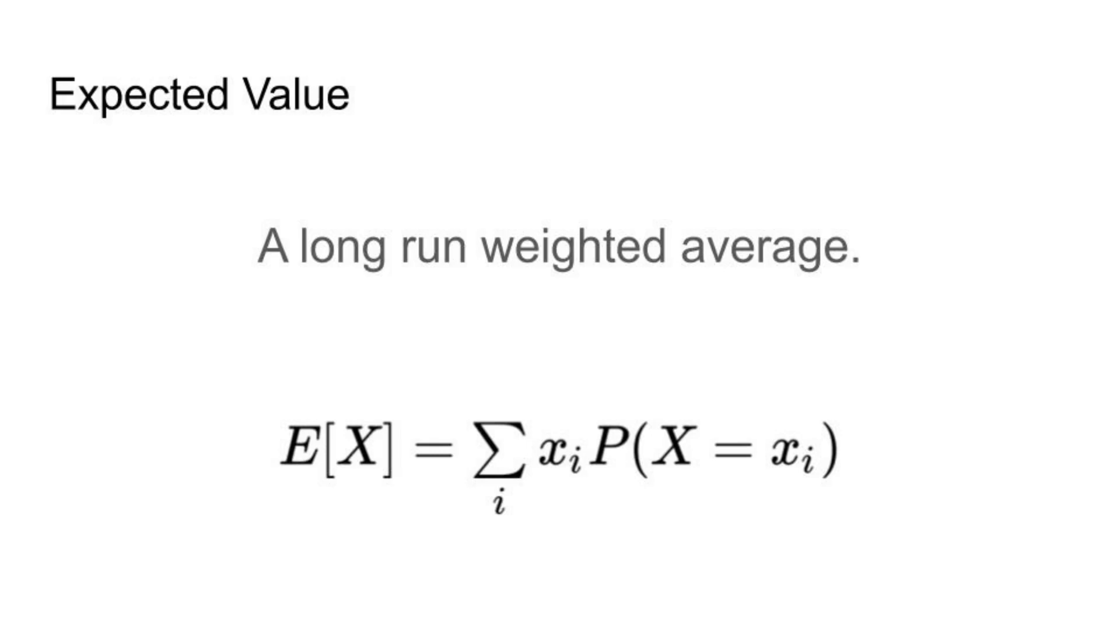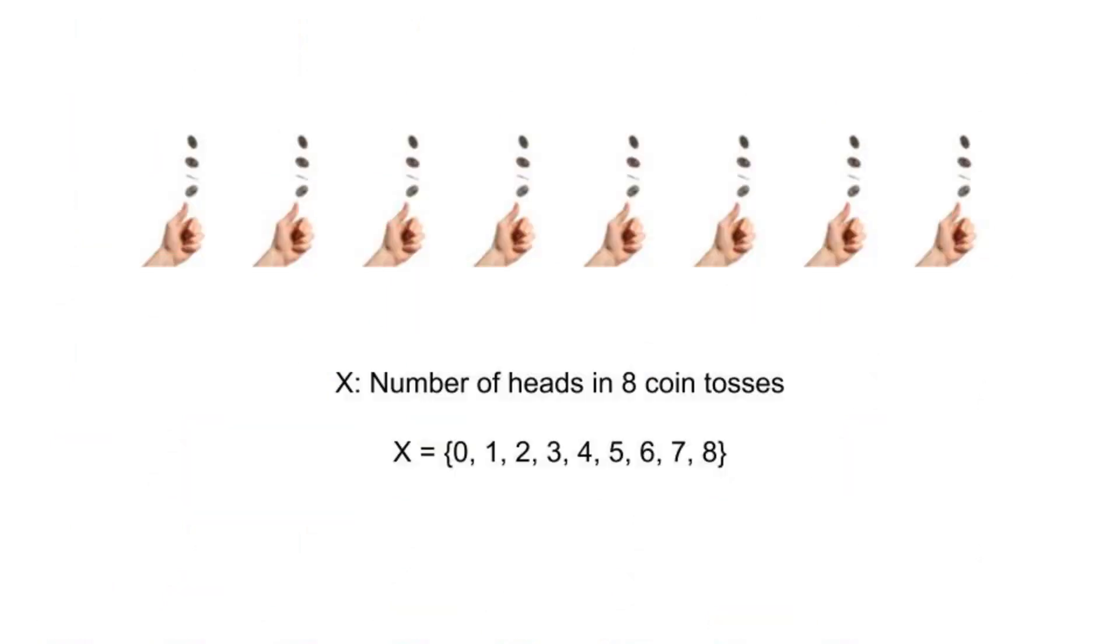It's a variable representing a certain event like the number of heads in 8 coin tosses, the number of answers right on a test, or the number of wins in 50 rounds of blackjack. Each of these events has a set of all possible outcomes, where each possible outcome has a positive chance of happening.